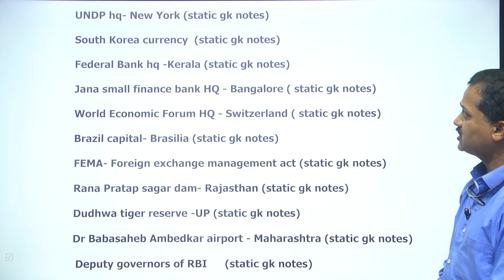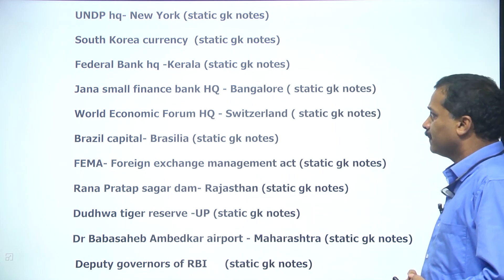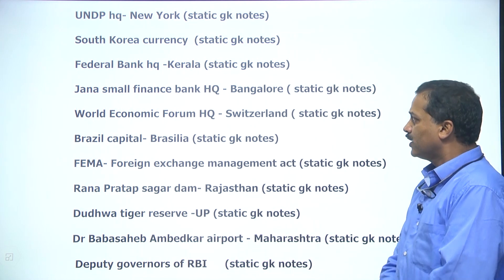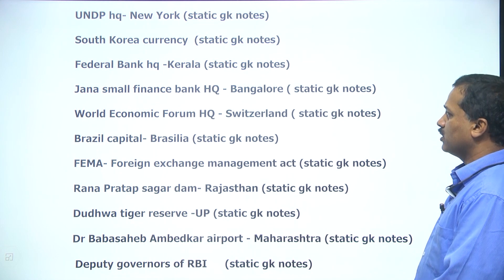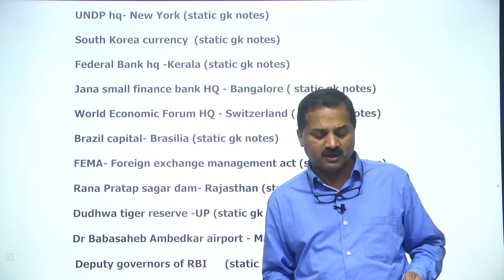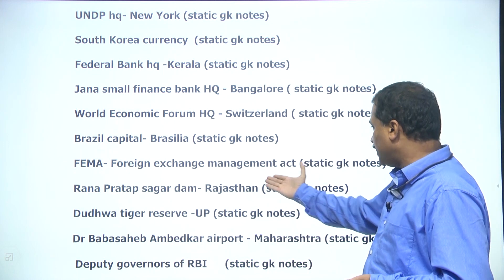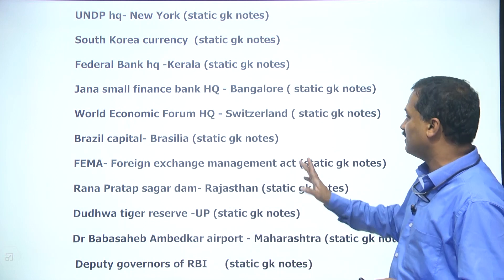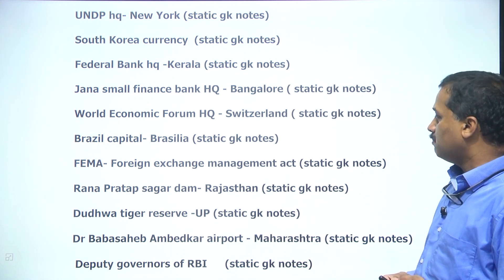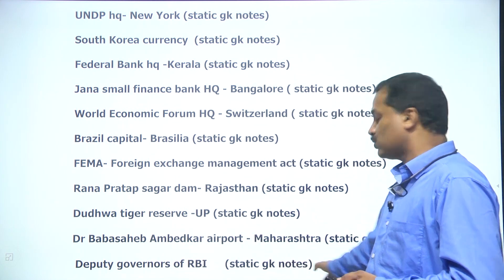UNDP headquarters was asked — South Korean currency — in my static notes. Federal Bank headquarters — for students in Kerala, they all know it is headquartered in Kerala — mentioned in my static notes and regular notes. Jana Small Finance Bank — Bengaluru. World Economic Forum — Switzerland. Brazil capital — Brasília — in my static note; I have given the capitals of most countries. FEMA — Foreign Exchange Management Act, which replaced the earlier FERA — also in my static note. Rana Pratap Sagar Dam — Rajasthan. Dudhwa Tiger Reserve — Uttar Pradesh. Dr. Babasaheb Ambedkar Airport — Maharashtra. Deputy Governors of RBI — there are four — mentioned many times in my notes and in my static notes.